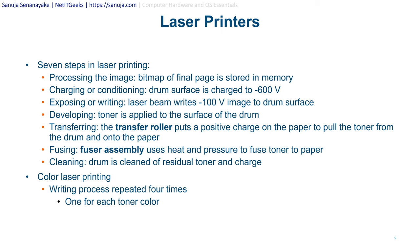The seven steps of laser printing are: processing the image, charging or conditioning, exposing or writing, developing, transferring, fusing, and cleaning. For your A-plus certification exam you should know these steps in order, as they may show up on exams and quizzes. For color printing, the writing process is repeated four times, once for each toner color such as yellow and magenta.